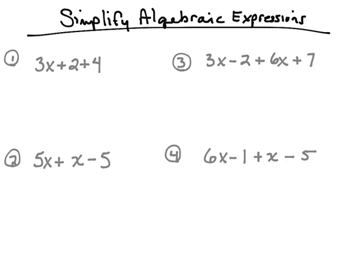In this video we'll be looking at simplifying algebraic expressions. Before we start simplifying those expressions, let's talk about what an algebraic expression is. An algebraic expression is an expression that has both variables and numbers, and there are four examples here of algebraic expressions. Notice they do not have equal signs, therefore they're not called equations — these are expressions.